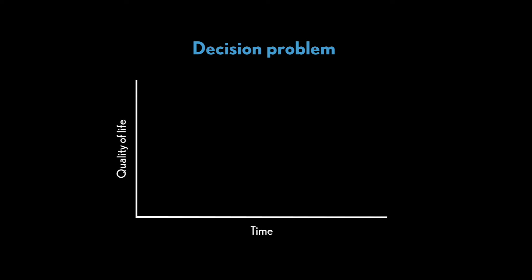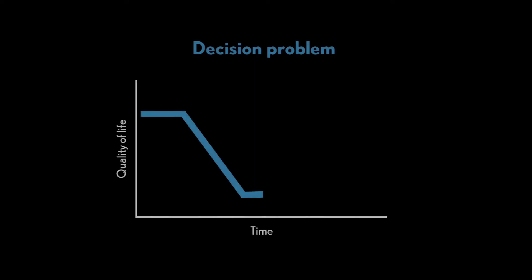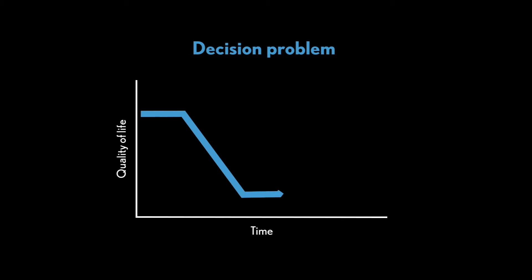With a decision problem, you're going along in life and hopefully it's okay, then a negative event happens and your quality of life drops. For instance, if you happen to be laid off, get sick, or your child's not doing well in school, now you have a decision problem and you want to solve it. If you solve it well, you get back to the quality of life you had before — but you don't improve your life.